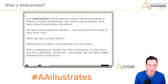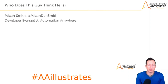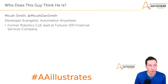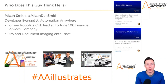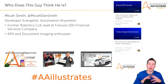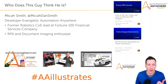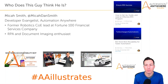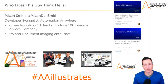My name is Micah Smith. I am a Developer Evangelist here at Automation Anywhere. I'm a former COE lead at a financial services company, and I am an RPA and document imaging enthusiast. I love everything about RPA — I'm creating bots even on my off time because I just think it's fun. I've also written articles on the Automation Anywhere blog about how to run a COE, different best practices when creating bots, and how you can use things like Bot Store to turbo-charge your automations.